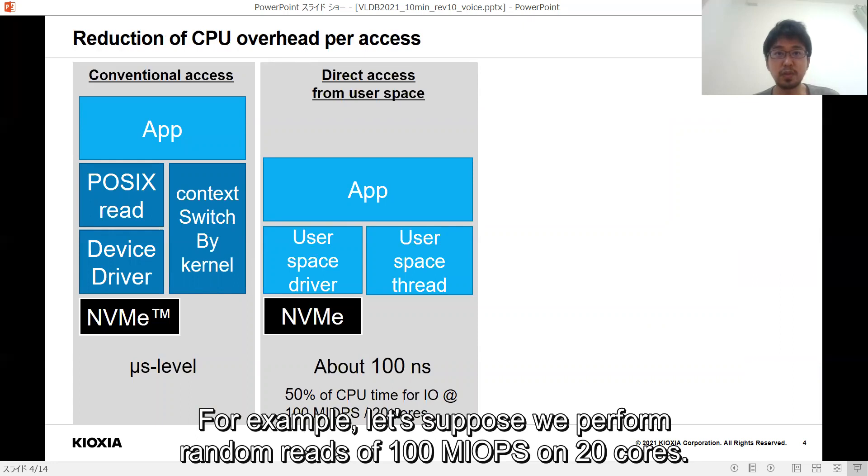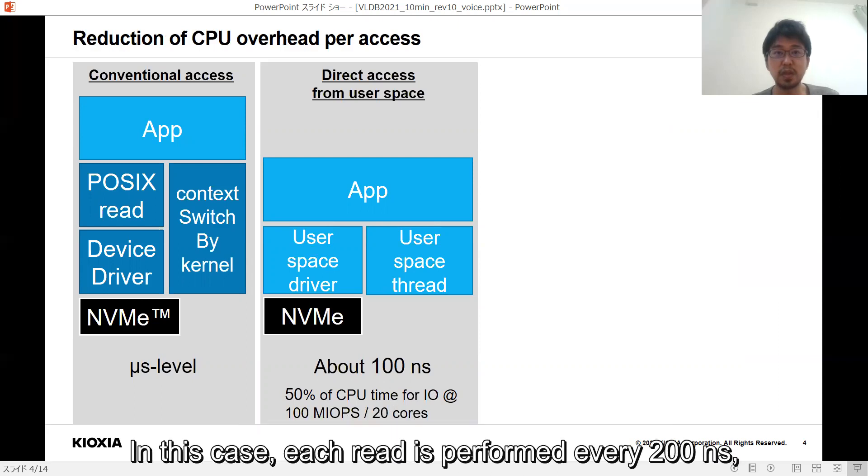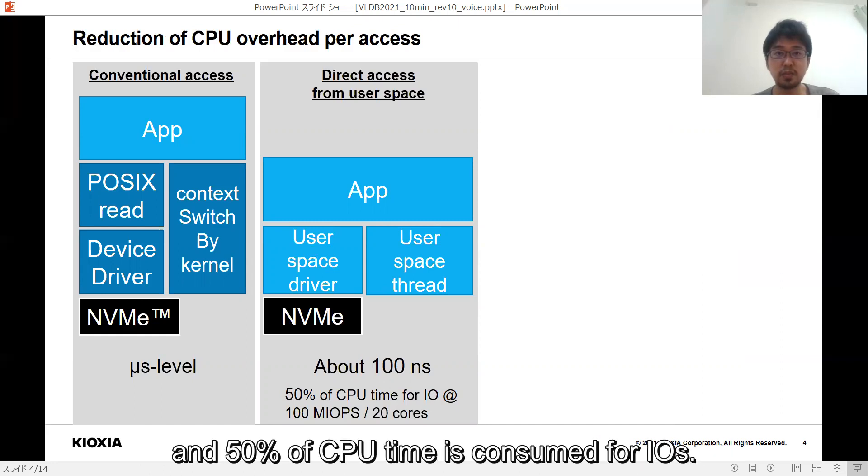For example, let's suppose we perform random reads of 100 million IOPS on 20 cores. In this case, each read is performed every 200 nanoseconds, and 50% of CPU time is consumed for IO.